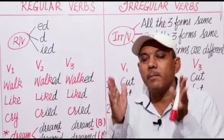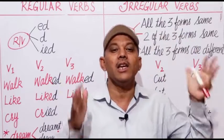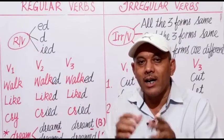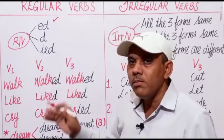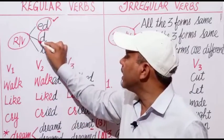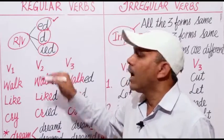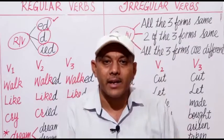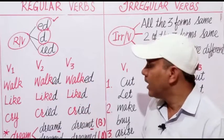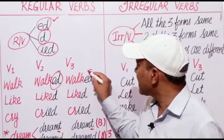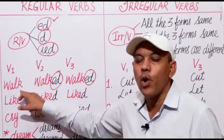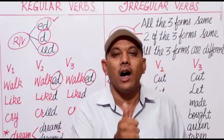The basic difference between a regular verb and an irregular verb is that a regular verb is a verb whose second form and third form ends in either -ed, -d, or -ied by removing the last y. For example: walk, walked, walked. The past and past participle forms of the verb end in -ed. We add -ed to the base form of the verb to change its other two forms.